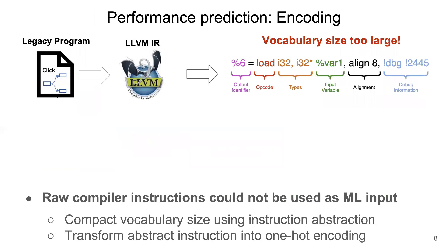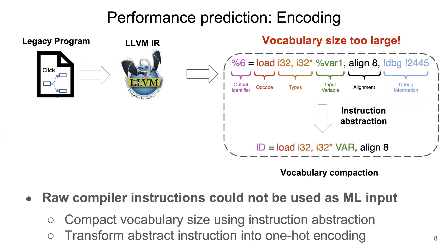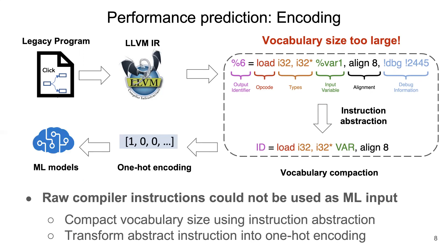One problem that remains is how to encode the Click program as a proper machine learning model input. As a first step, CLARA compiles the Click NF into LLVM IR, which is a representation shared by most host-level NF handlers. CLARA then tries to view each LLVM instruction as a distinct word. However, a closer look at the LLVM instructions suggests that naively using them as input is infeasible. Many parts of the instruction — for instance, virtual registers, variables, and constant numbers — could take arbitrary names or values. As a result, the size of the vocabulary could be astronomical. To solve this problem, we first compress the vocabulary size using a process we call instruction abstraction, which abstracts away variable and register details. In this way, we could reduce vocabulary size to a reasonable range while still preserving the sequential information. We could then transform abstract instructions into standard one-hot encoding, and feed them into machine learning models to do accurate predictions.